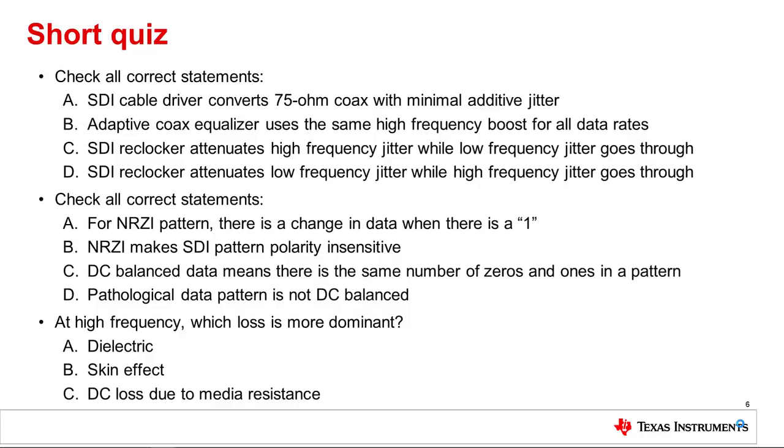B. Adaptive coax equalizer uses the same high frequency boost for all data rates. C. SDI reclocker attenuates high frequency jitter while low frequency jitter goes through. D. SDI reclocker attenuates low frequency jitter while high frequency jitter goes through. The correct answers are A and C.